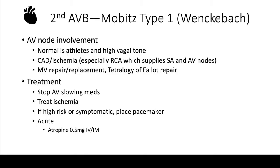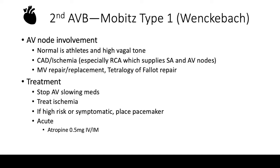For second degree Mobitz type one, etiologies include normal variants in athletes or those with high vagal tone, as well as ischemia — because the RCA specifically supplies the SA and AV nodes. Structural changes such as prior mitral valve repair, replacement, or repaired congenital disorders like Tetralogy of Fallot can also cause it. Treatment involves stopping contributing medications and treating ischemia. For testing purposes, a pacemaker is almost never placed for type one unless the patient is symptomatic.